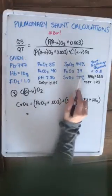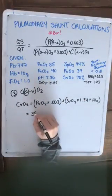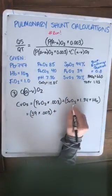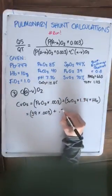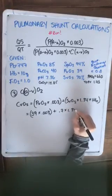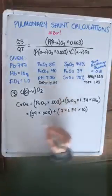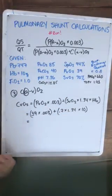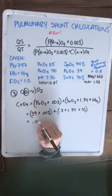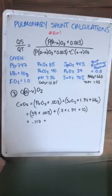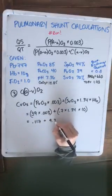Plug in some numbers. Our PVO2 is given to us at 39 times 0.003, plus our SVO2 is 70%, so 0.7 times 1.34 times 10, our hemoglobin. 39 times 0.003 is 0.117, plus 0.7 times 1.34 times 10, which is 9.38.